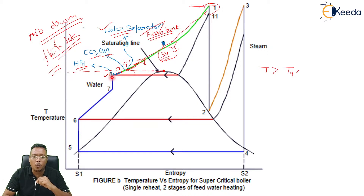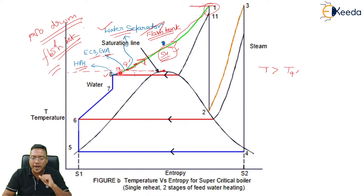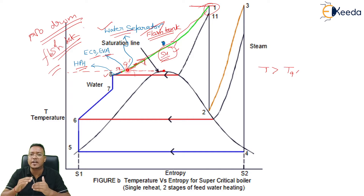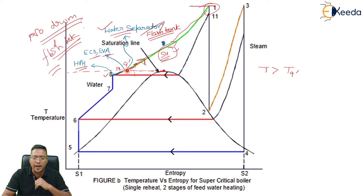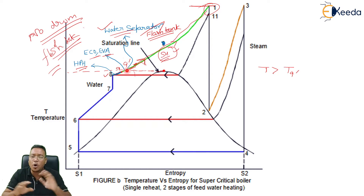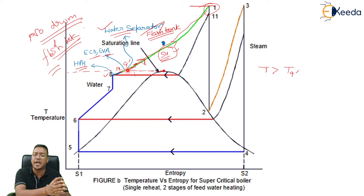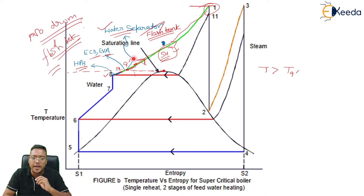Let's see this process on the T-S diagram. This is point number eight — the water from the feed pump goes into the HP heater, so temperature increases from eight to nine. From point nine to nine-dash, this process happens in the economizer or evaporator, where water takes heat from the boiler or flue gas and temperature increases. At nine-dash temperature, the water flashes into steam directly — there is no formation of a mixture of water and steam. From point nine-dash, we provide one flash tank, and whatever steam is generated is sent into the superheater. From nine-dash to one, this is completed in the superheater.